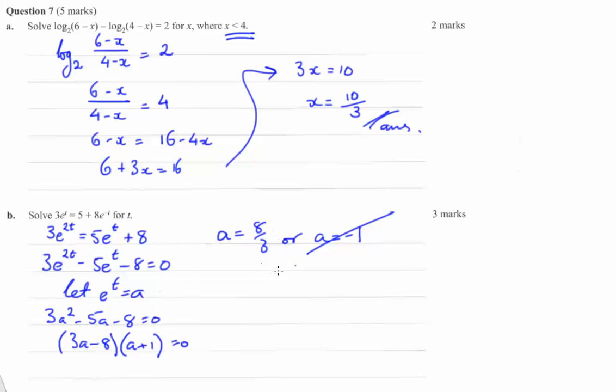So putting this into there, we get e to the power of t equals 8 on 3. Therefore, t equals the natural log of 8 thirds. And that should be your answer.